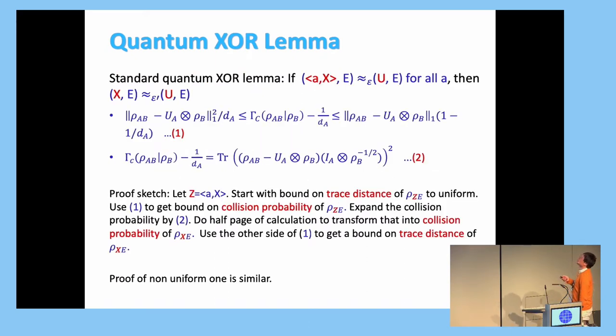So a quick sketch of how you prove the standard XOR lemma is, let's say this. Remember we want to prove that this is true and that is true. So let's say A inner product with X is Z. So first we start with the trace distance of Z to uniform. And we use the first equation to get that to a bound on collision probability. Then use the second equation to expand with some algebra. Then you get to collision probability of X. Then you just use the first equation again to get the bound on trace distance of X. Then you prove this. And the proof of non-uniform form is similar.